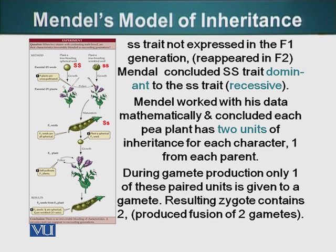Additionally, Mendel concluded that during gamete production — that is, the production of pollen, ovaries, or eggs — one of these paired units is given to the gamete. Not both, but just one of them.